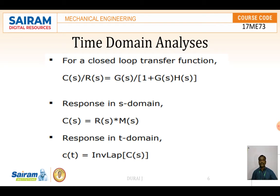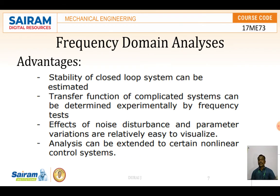In the frequency domain analysis, we find values with the help of sinusoidal forms. For a closed-loop transfer function in the time domain, the formula is: C(s)/R(s) = G(s) / (1 + G(s)·H(s)), which is the Laplace transform of output divided by Laplace transform of input. The response in the s-domain is C(s) = R(s)·M(s), and the response in the time domain is c(t) = inverse Laplace of C(s).